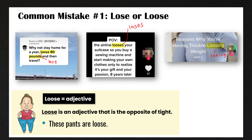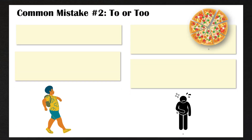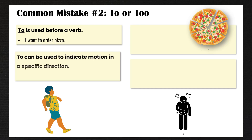So let's talk about the second common mistake: the difference between to and too. To with one O is used before a verb. For example, I want to order pizza. To with a single O can also be used to indicate motion in a specific direction. For example, James is walking to the restaurant — he is moving in the direction of the restaurant.